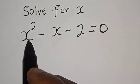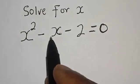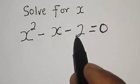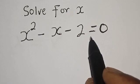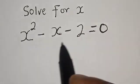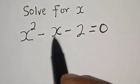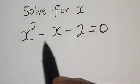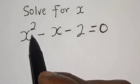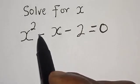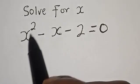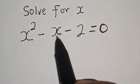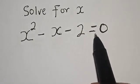Solve for x: s squared minus s minus 2 is equal to 0. Hi everyone, welcome to my class. In this class we want to find the value of s from this given equation s squared minus s minus 2 is equal to 0.